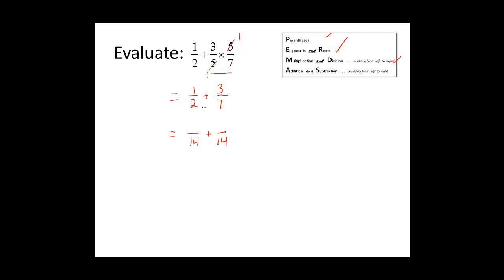I multiplied this denominator by seven to get fourteen, so I need to multiply the numerator by seven as well. I multiplied seven times two to get fourteen, so I need to multiply the numerator by two, and I get six. We have the same denominator, so we will add our numerators. Seven plus six is equal to thirteen, and we keep the denominator. So thirteen-fourteenths is the answer to this problem.